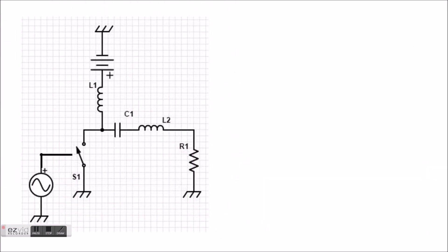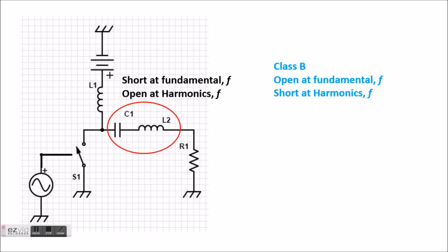To control the harmonics we can first put a resonator at the output. This resonator circuit creates a condition where the circuit is short at fundamental and open at the harmonics. In comparison, a Class B requires a completely different configuration where circuit is open at fundamental and short at the harmonics.